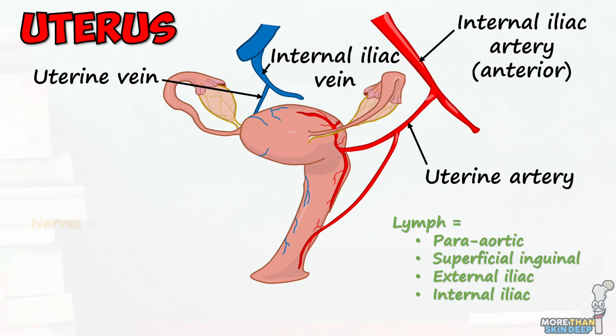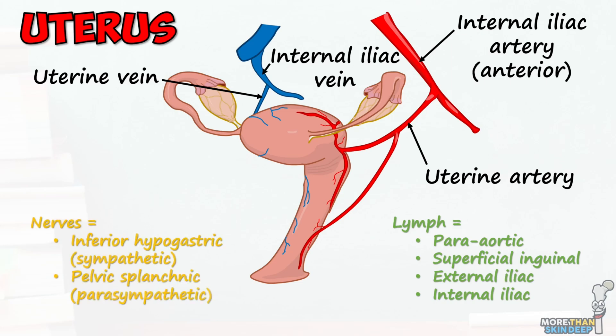Sympathetic nervous supply is from the inferior hypogastric plexus, whilst parasympathetic supply comes from S2, S3, and S4 via the pelvic splanchnic nerves.